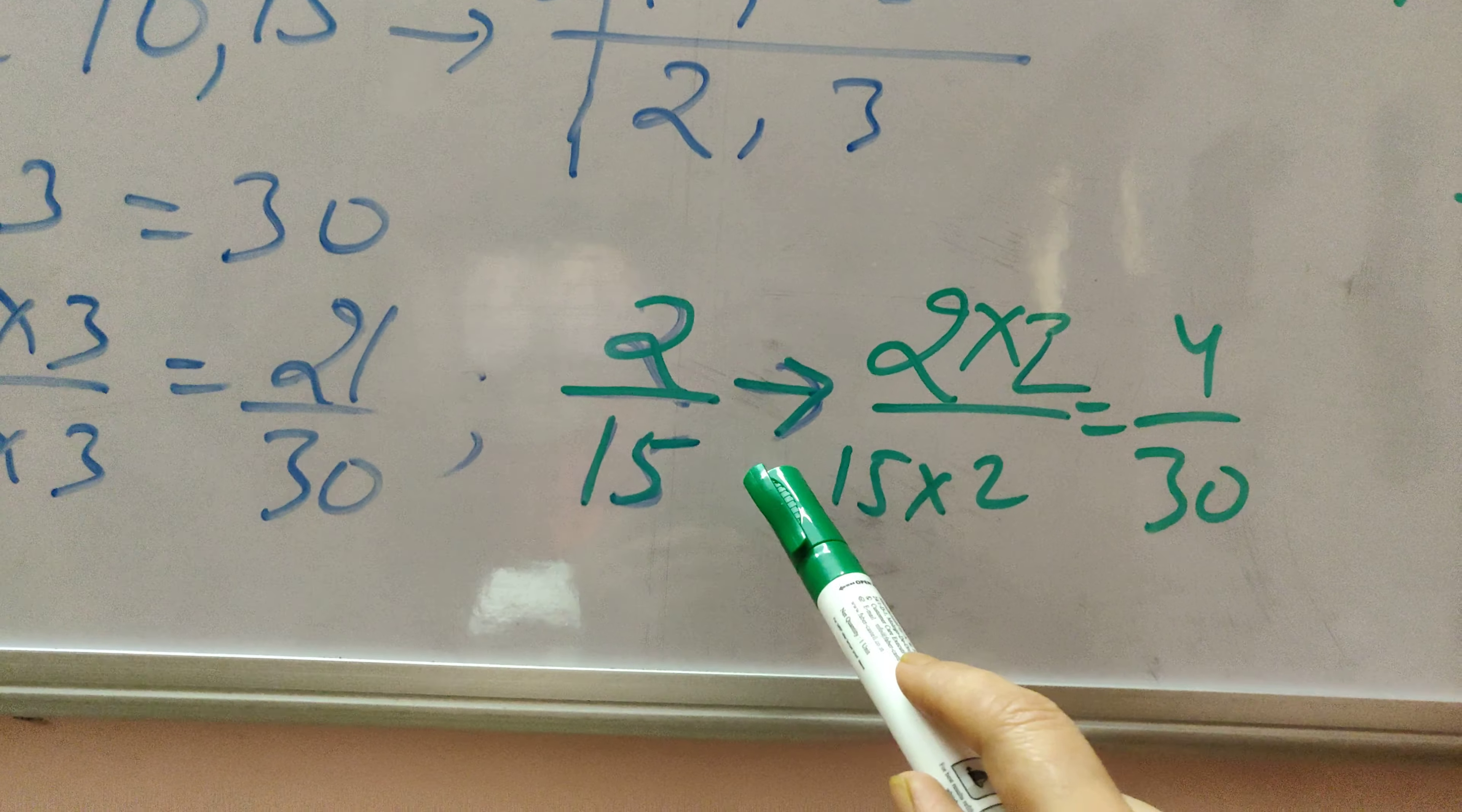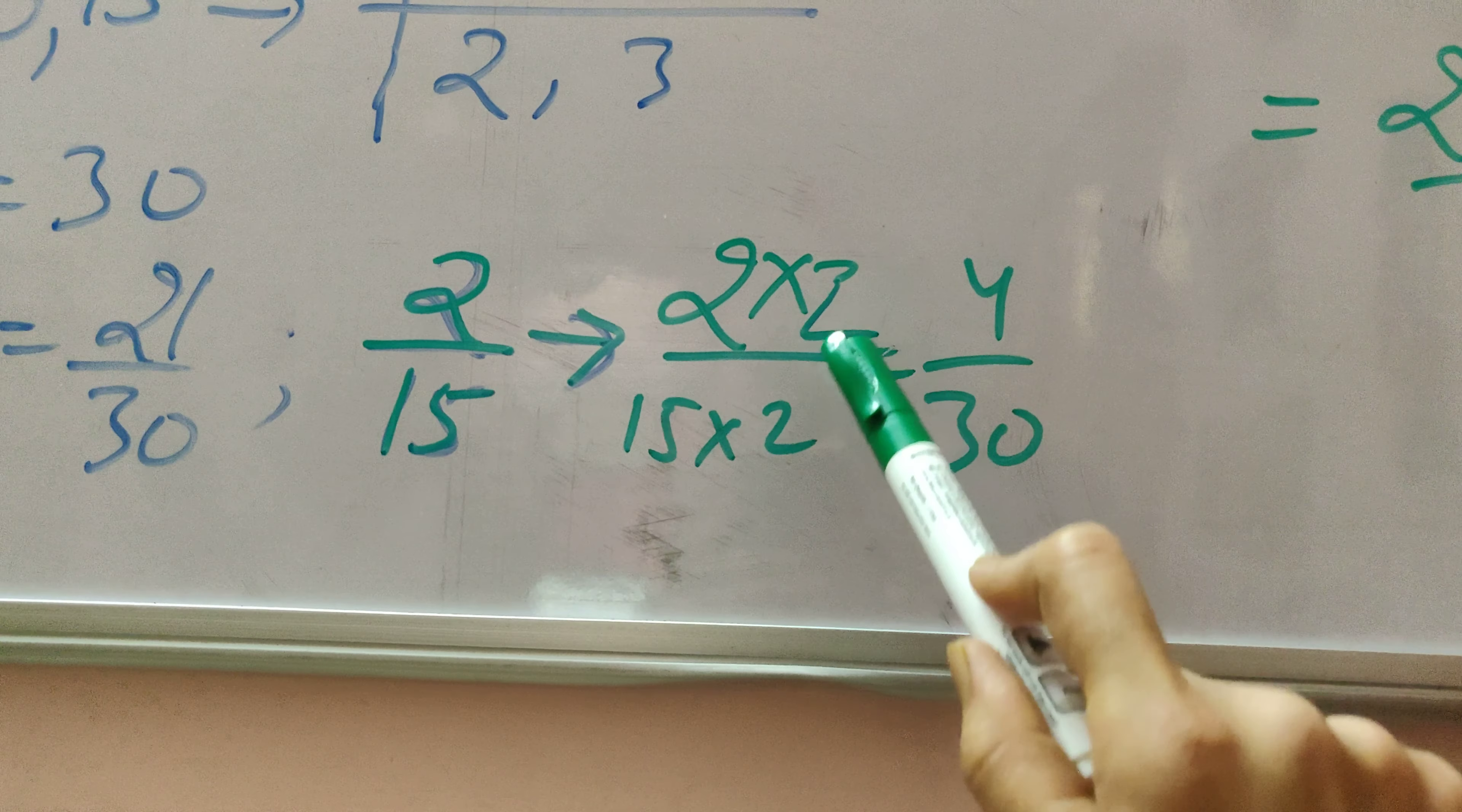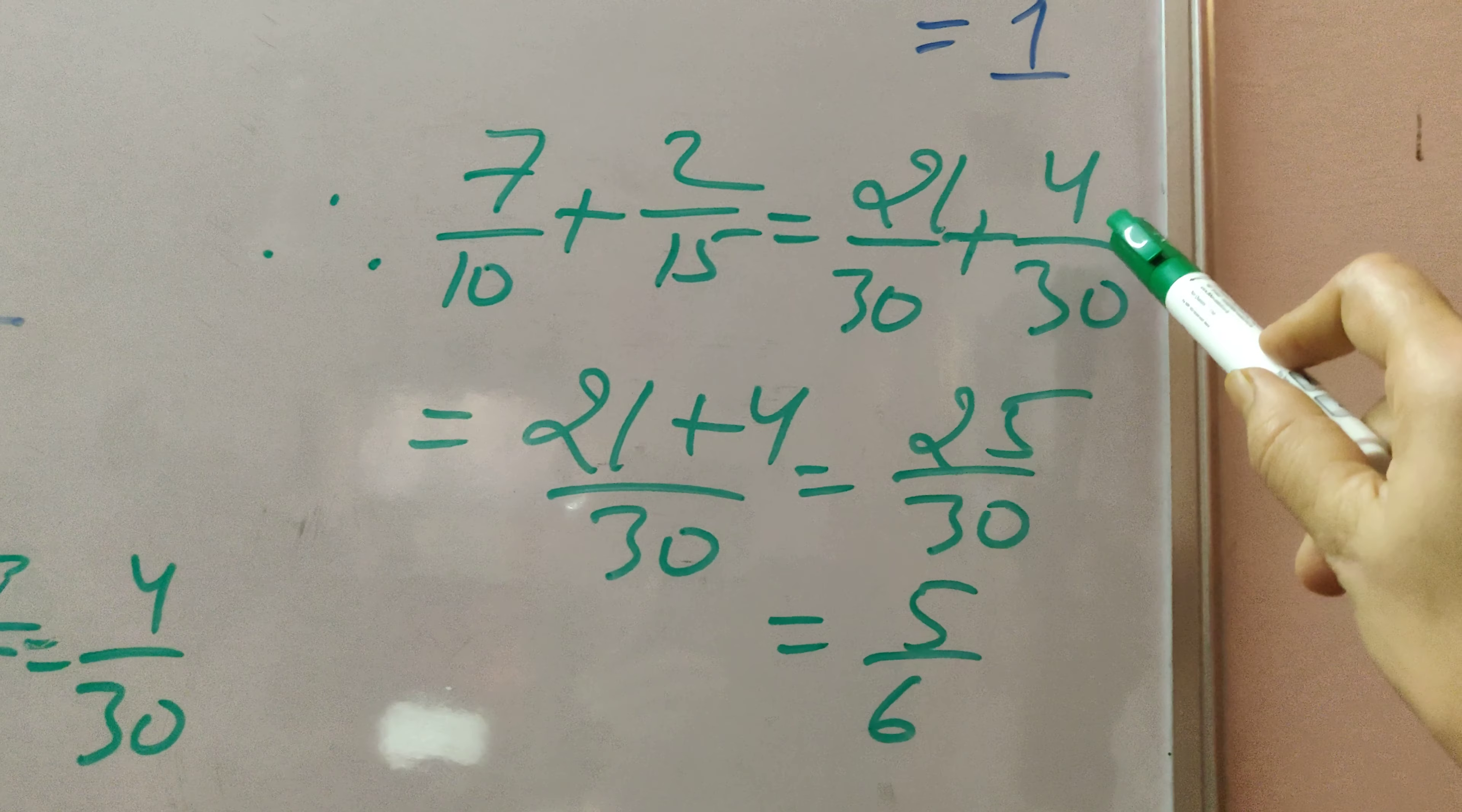The same way, 2 by 15 will be converted. 15 has to be converted into the form of 30. So 15 into 2 is 30. We will multiply 2 into 2 at the top as well, that is the numerator and denominator both will be multiplied with 2 to get 4 by 30. So now we can say 7 by 10 plus 2 by 15 is equal to 21 by 30 plus 4 by 30.